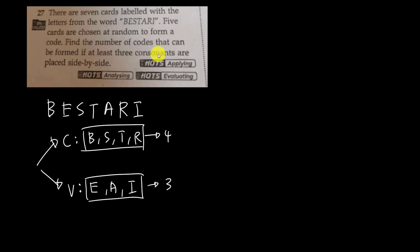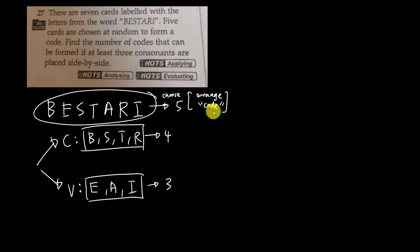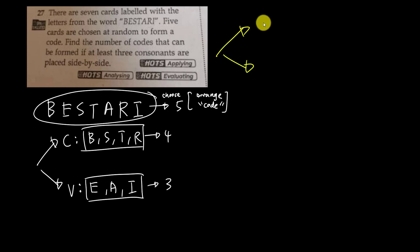From BESTARI, we want to select five letters to form a code, so we need to arrange them. This question is more complicated compared to others. Because we have four consonants and need at least three consonants, I have two cases to consider.